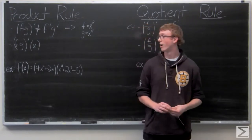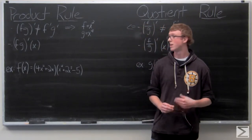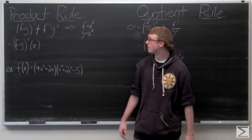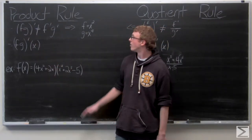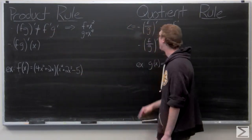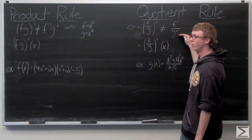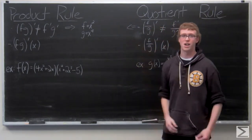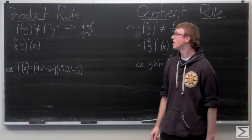These are really important rules to remember because some people typically might think that the derivative of two functions multiplied together, fg, would just be f prime times g prime, or divided would just be f prime over g prime. That's not the case, and we're going to look at a simple example immediately to see why.